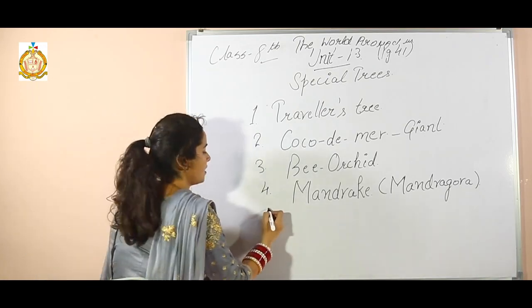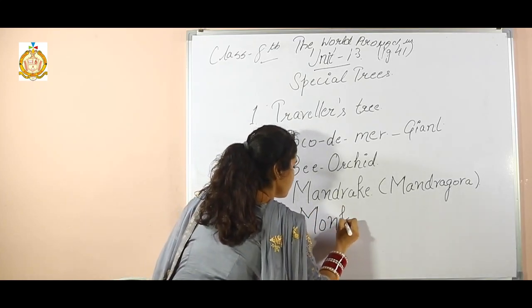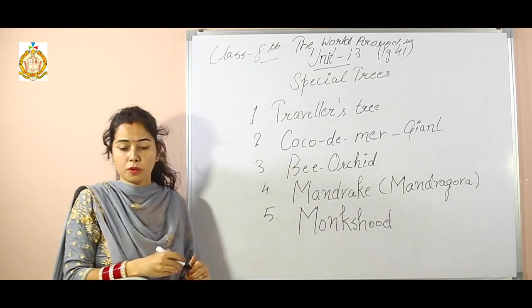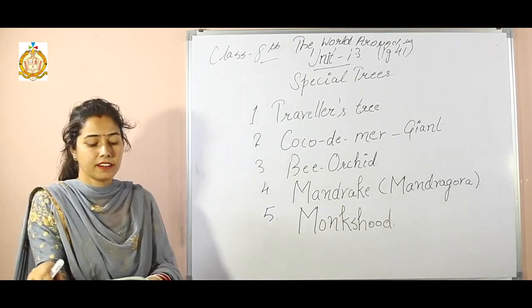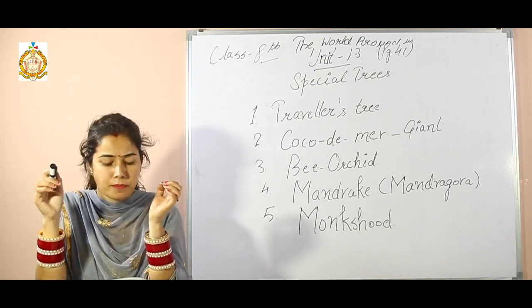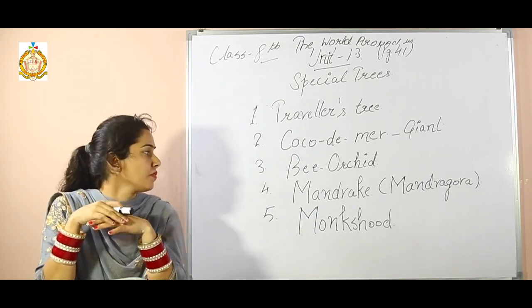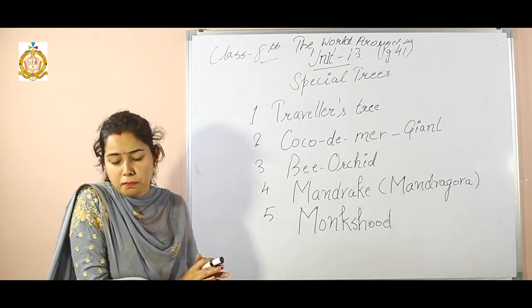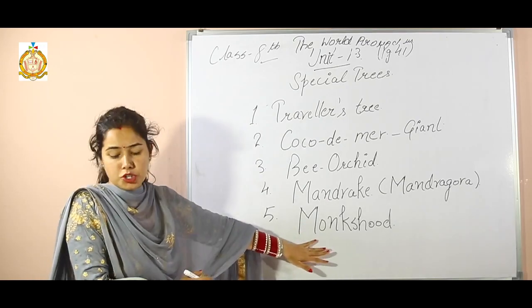The next plant is Monkshood. What are the different characters of this plant? This popular garden plant has poisonous fruits and unpleasant taste, but there are very few cases where accidental poisoning takes place.